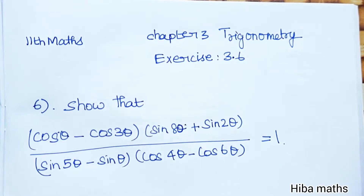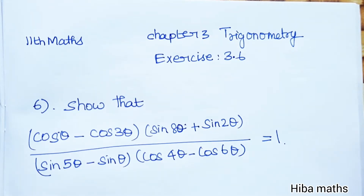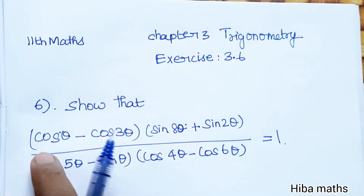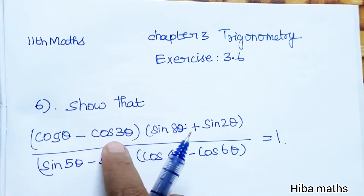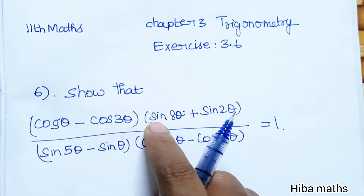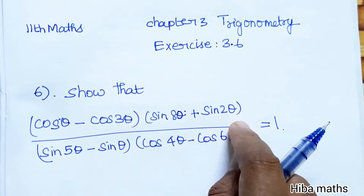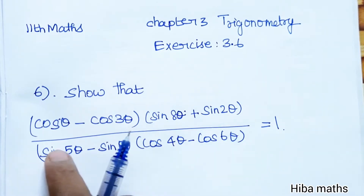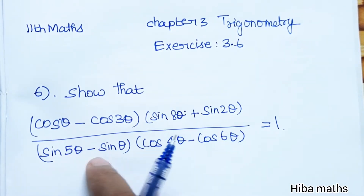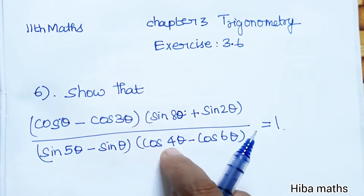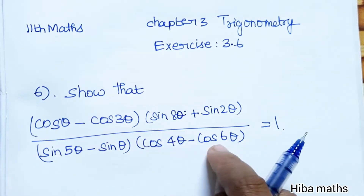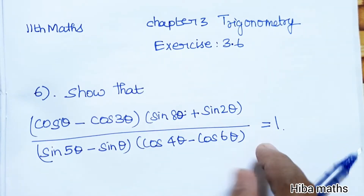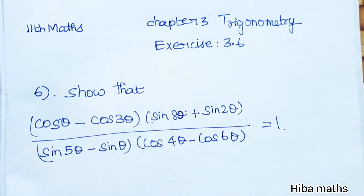Hello students, welcome to Heba Max 11th standard Math Chapter 3 Trigonometry Exercise 3.6, plus 6th question. We will solve and show that cos theta minus cos 3 theta into sin 8 theta plus sin 2 theta, divided by sin 5 theta minus sin theta into cos 4 theta minus cos 6 theta, is equal to 1. LHS equals RHS.